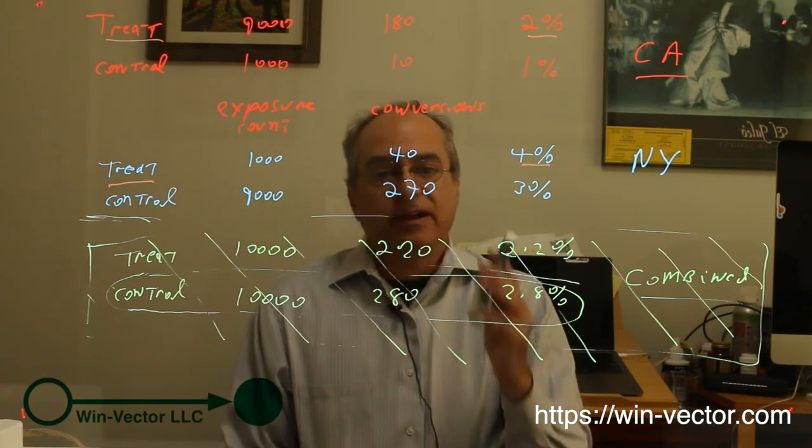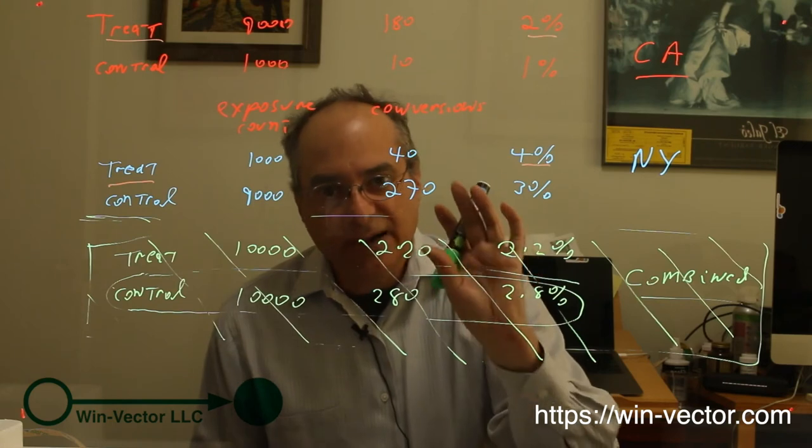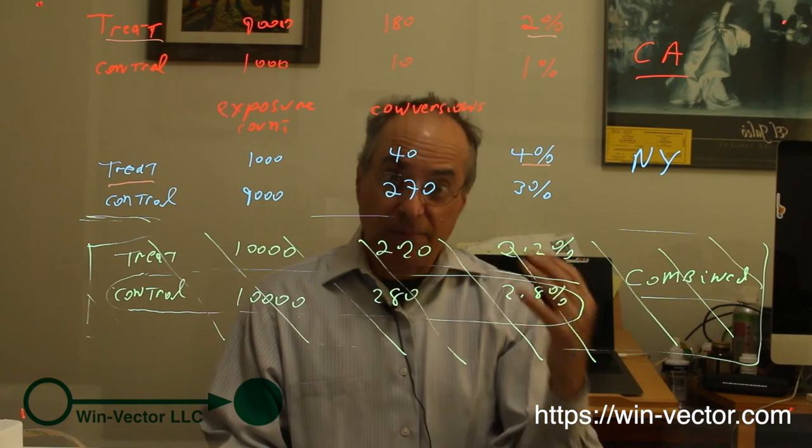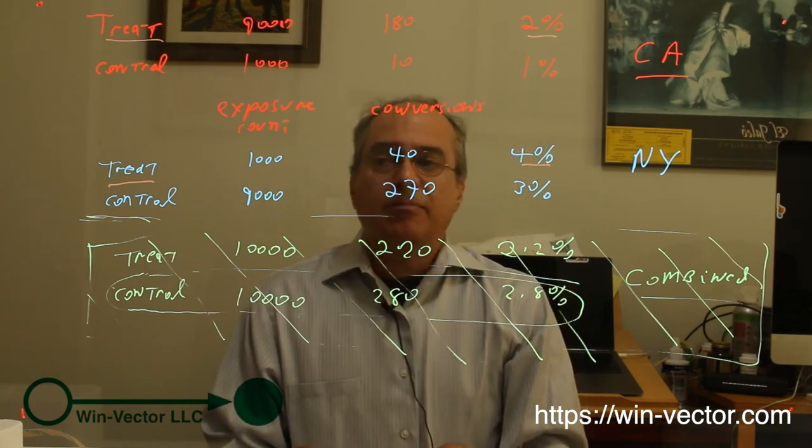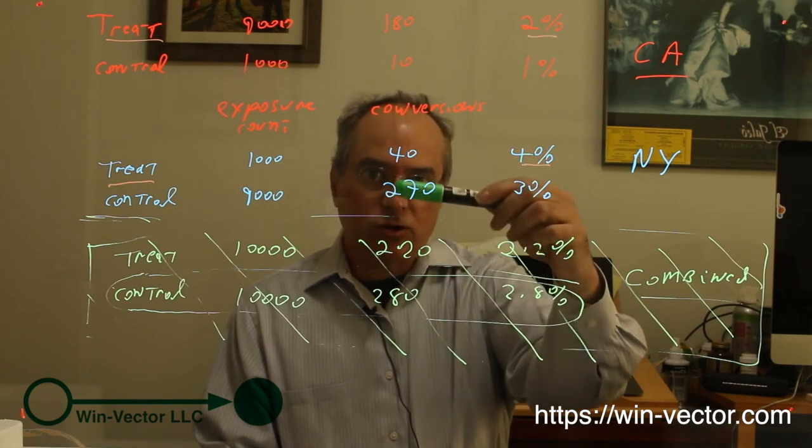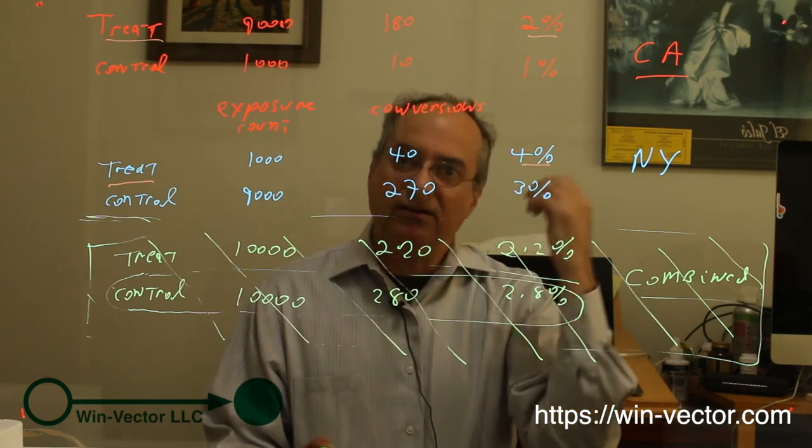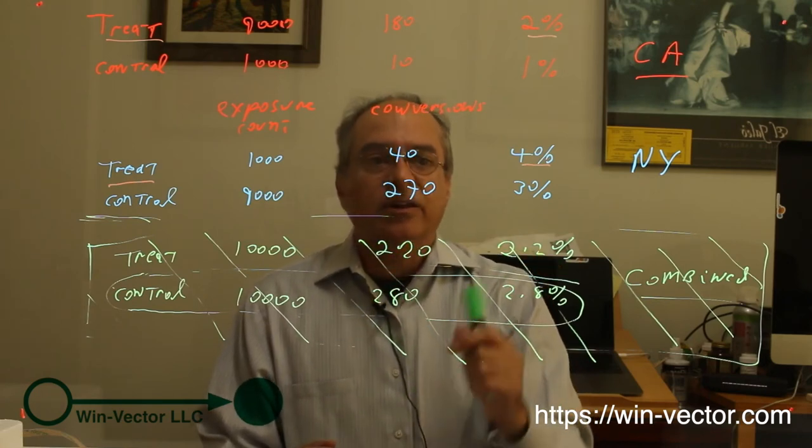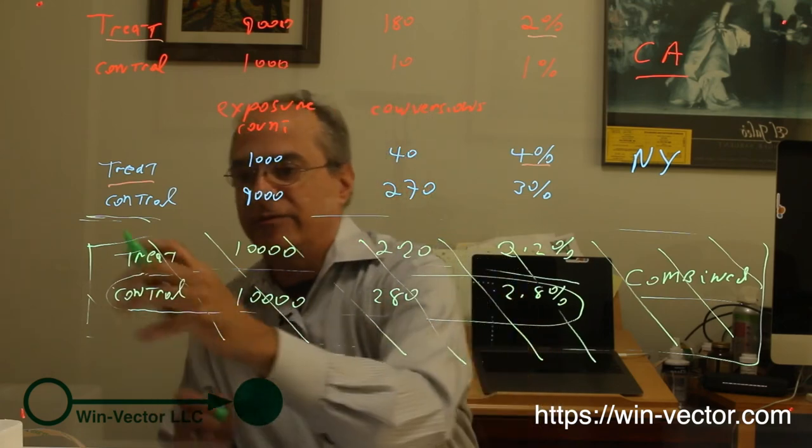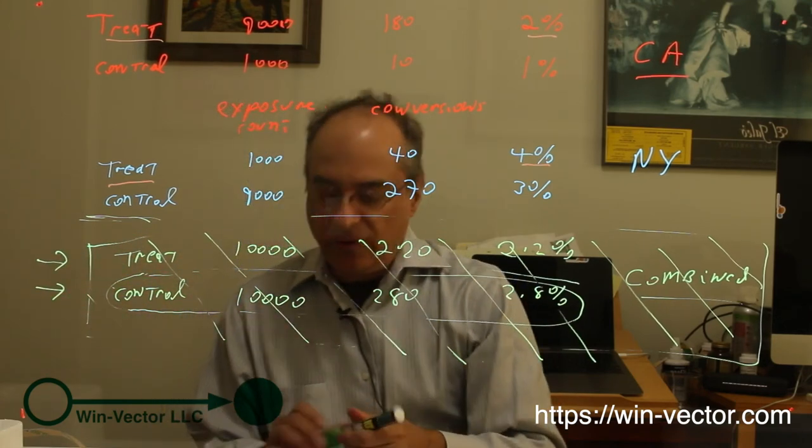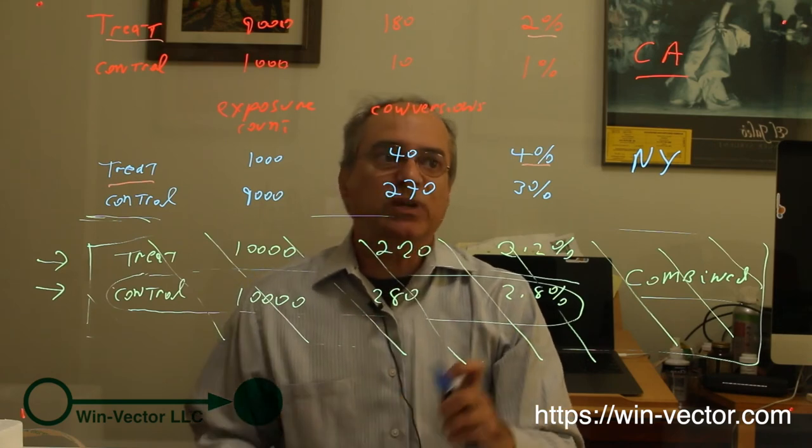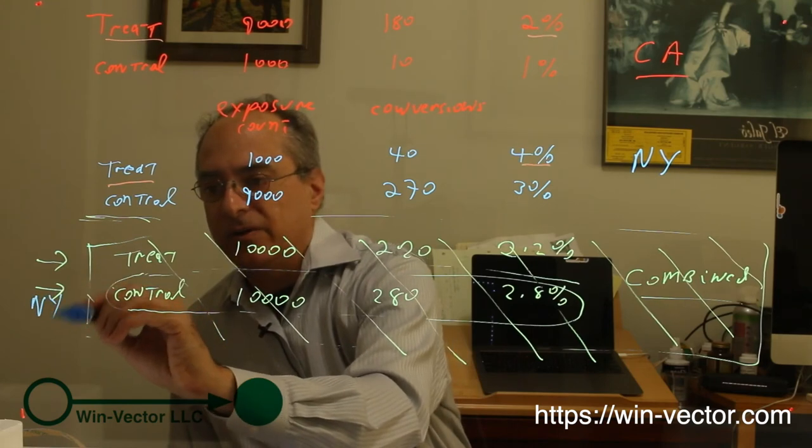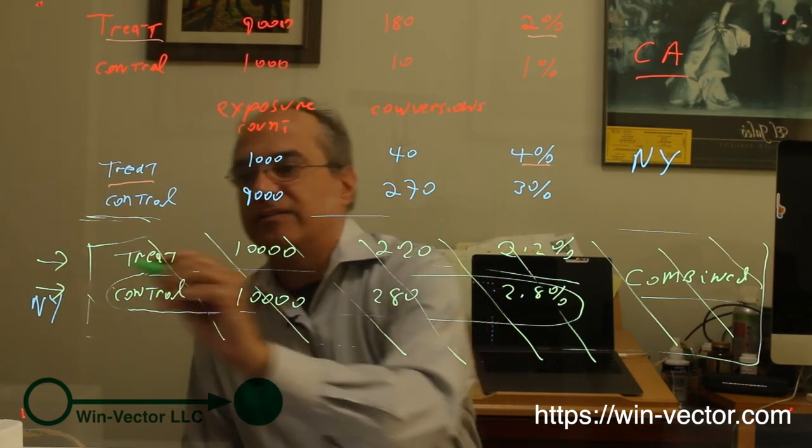How do we know it's the wrong answer? This combined set is not a proper controlled experiment or A-B test. In an A-B test, a proper one, the only thing that should be differing between the two groups, treatment and control, is whether you change the web page or whatever effect you're attempting to measure. However, in this combined set, not only is whether you're in treatment or control differing from row to row, but I also have a very good chance of guessing which region or geography you are. Most of the control data is coming from New York, and most of the treatment data is coming from California.